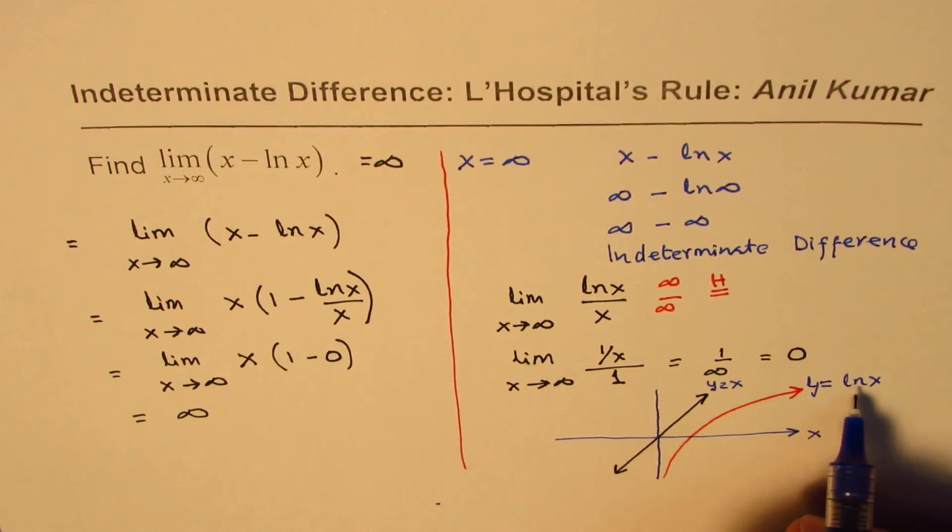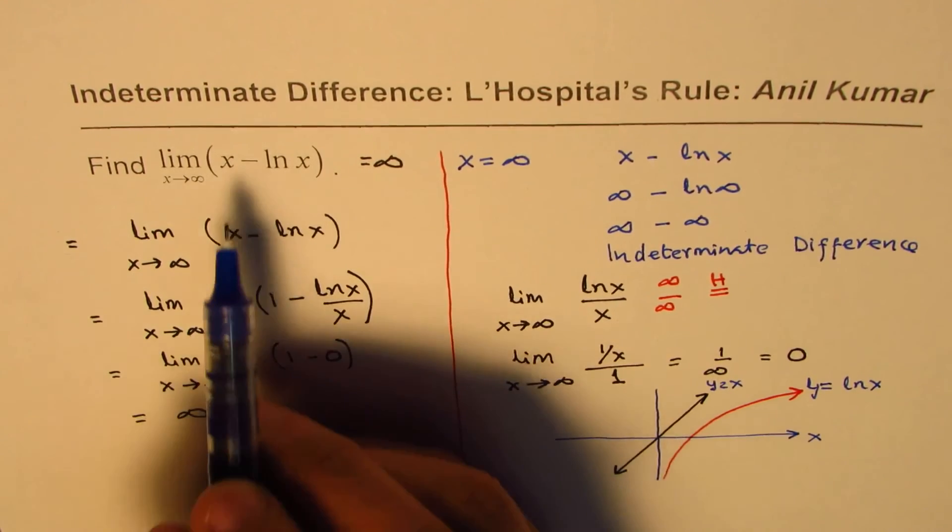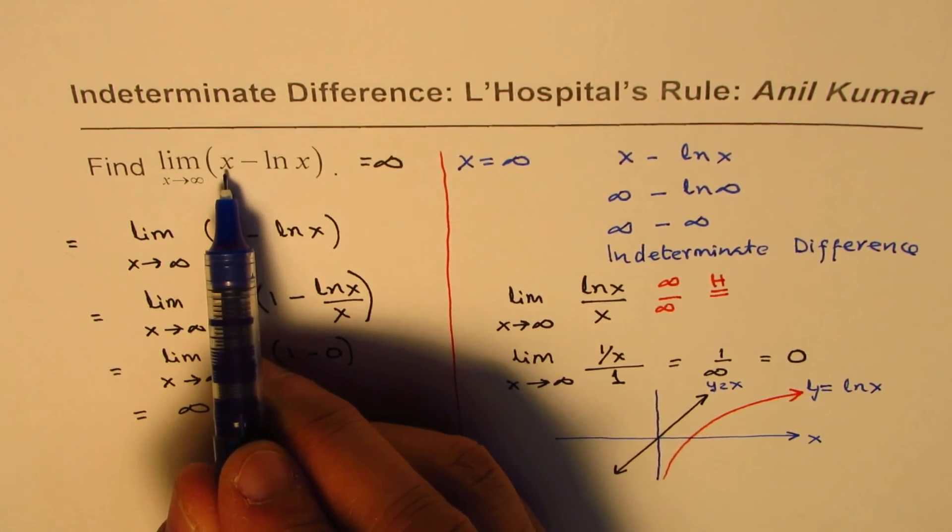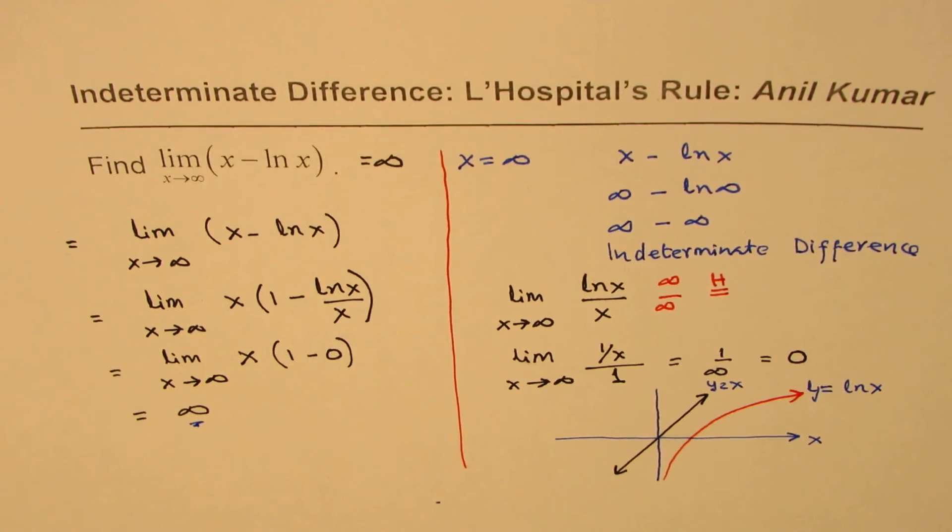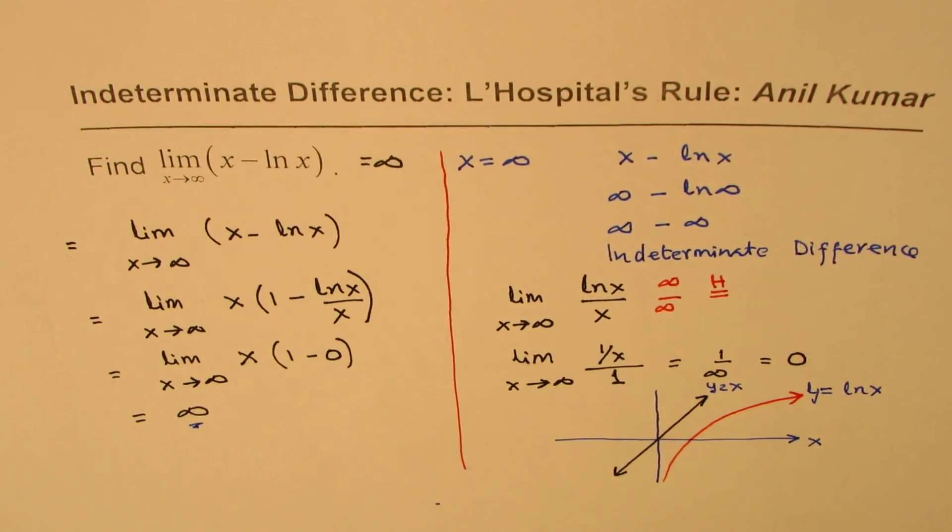As x approaches infinity, the value of x is much much higher than ln x, and therefore x dominates. From this reason also we could give that answer. It's kind of important to visualize and answer such questions. I hope that helps. I'm Anil Kumar, you can always share and subscribe. Thank you and all the best.